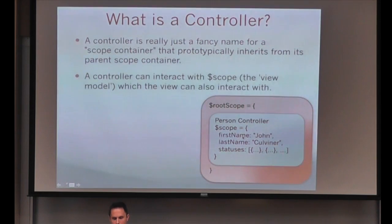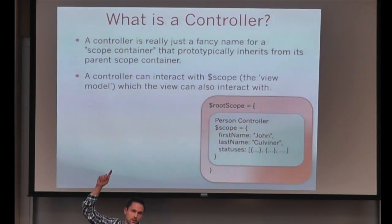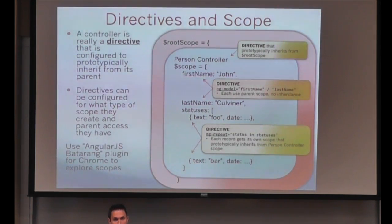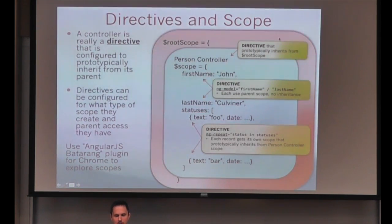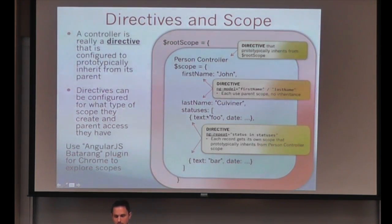I can interact with it from PersonController via scope because it prototypically resolves up. And what's a controller really? Controller is just a directive configured to prototypically inherit from its parent. We have root scope at the top, then PersonController which prototypically inherits from it. ng-model does not create scope — all it's doing is data binding to its parent. But ng-repeat, since it's looping out a bunch of statuses, creates an isolated scope for each one, which then prototypically inherits back up the chain. This is probably the most confusing part about Angular, but also one of the most powerful things.